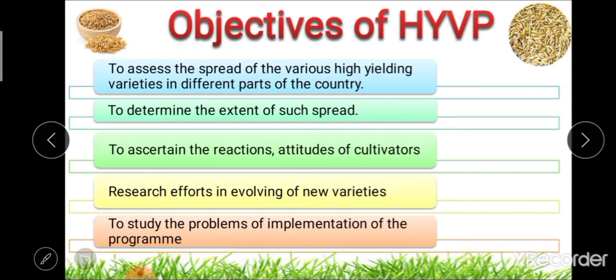The next point covers the objectives of the High Yielding Variety Program. The first objective is to assess the spread of various high-yielding varieties in different parts of the country.